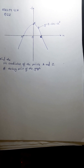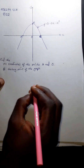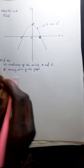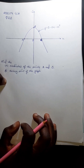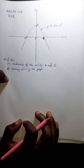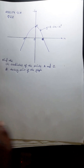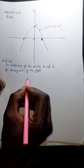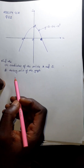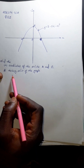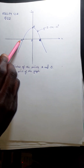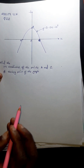Alright, good greetings everyone. We have the 2022 Paper 1 GCA Question 22 before us. Without further ado, let's solve it. The first question is to find the coordinates of points A and C.